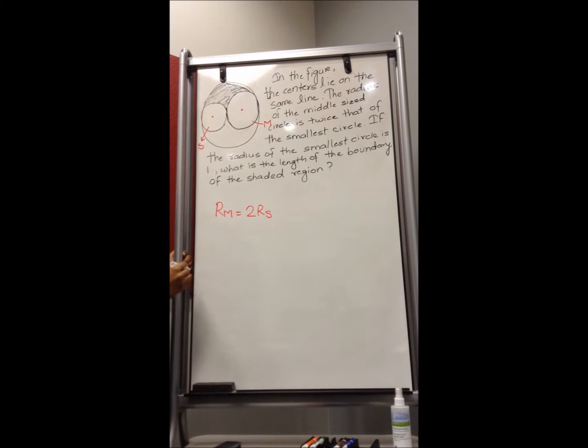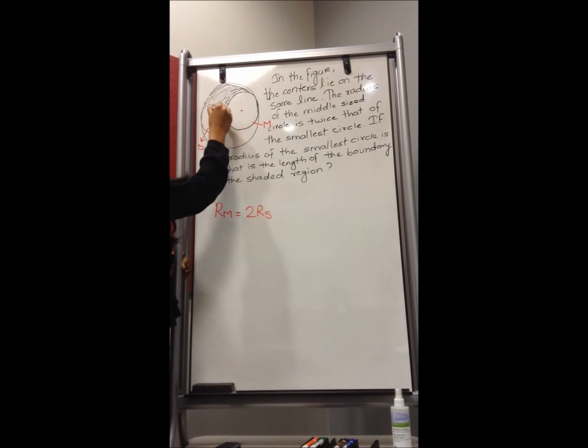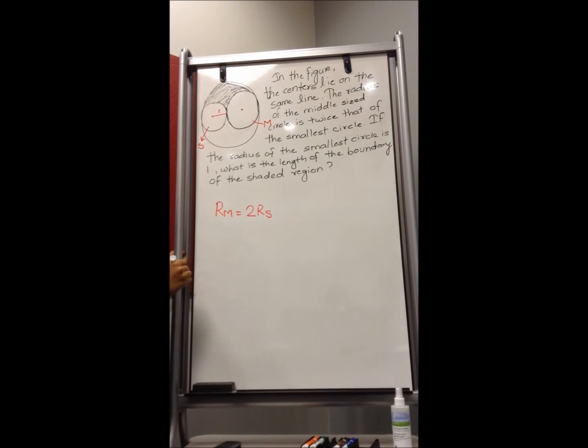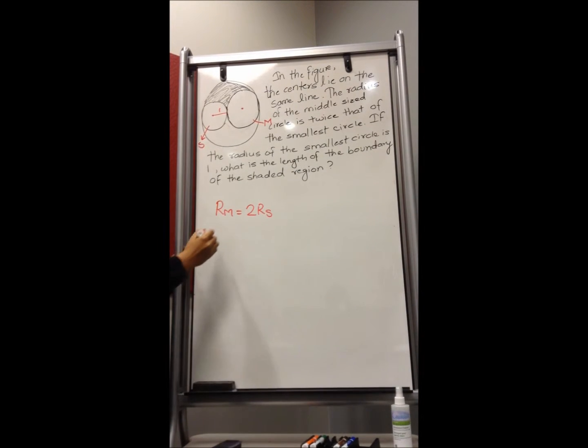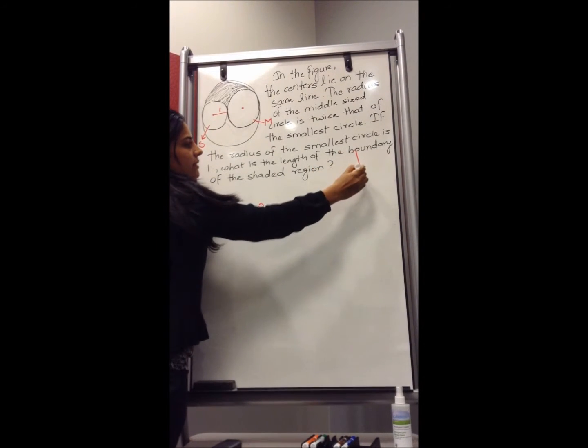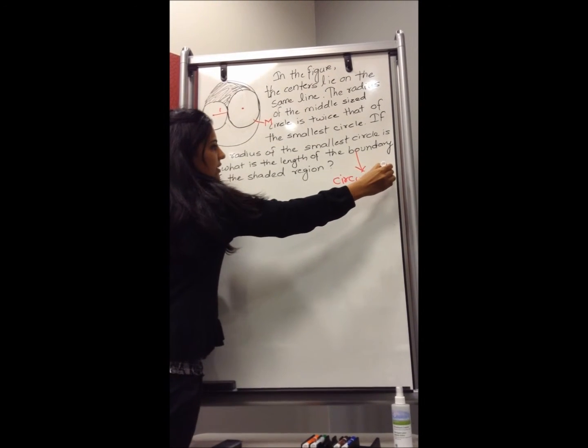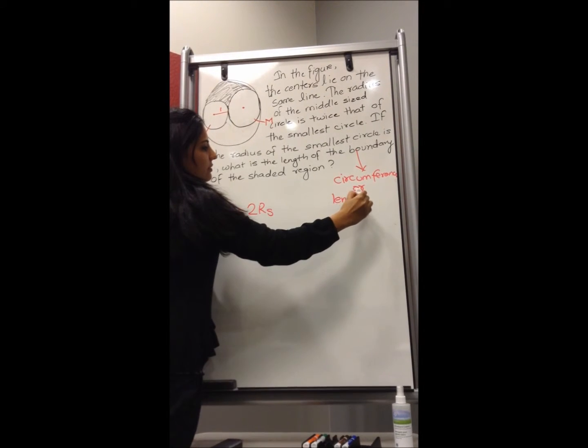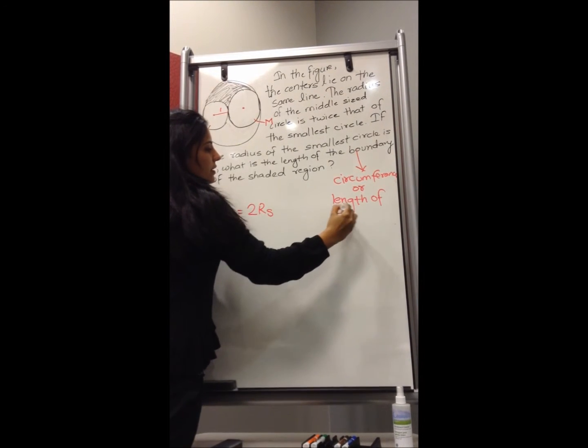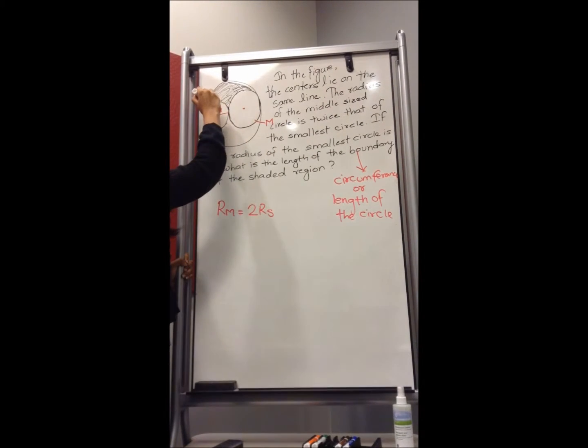So this is my relation. If the radius of the smallest circle is 1, that means this radius is given to you as 1. What is the length of the boundary of the shaded region? Now here, boundary means they are asking you for the circumference, or circumference is also called as length of the circle. So here they are looking for circumference, which is this part right here.